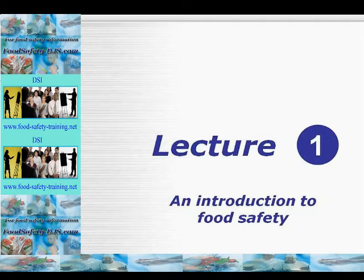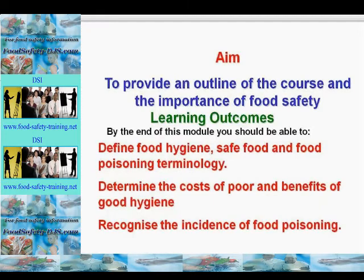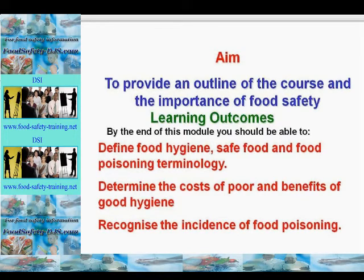Lecture one: an introduction to food safety. The aim of lecture one is to provide an outline of the course and the importance of food safety. By the end of this module, you should be able to define food hygiene, safe food and food poisoning terminology, determine the costs of poor and the benefits of good hygiene practices.